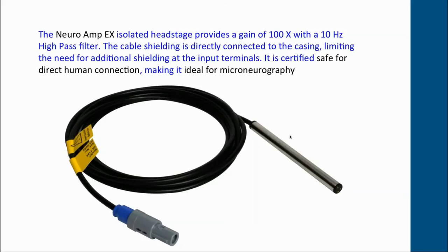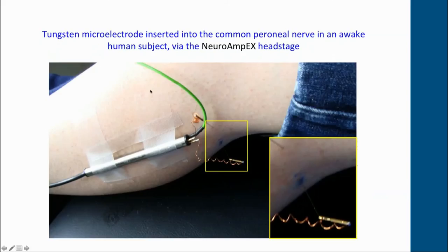This shows how we would attach the NeuroAmpX to the leg of a subject. You can use a Velcro strap to wrap it around the calf, or simply tape it on. You don't need to put gel on the head stage — and in fact you shouldn't, because gel could enter the terminals and short circuit or even damage it.